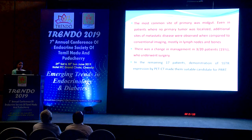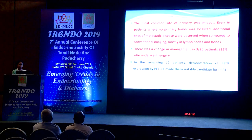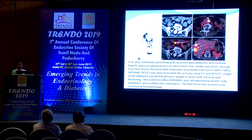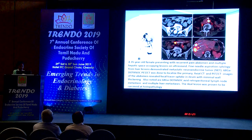Unlike CT, which uses size criteria for lymph nodes, Gallium DOTA-NOC PET-CT can detect uptake in very small lymph nodes of 0.4 to 0.5 cm — that is the difference between functional imaging and CT imaging. Management was changed in 15% of patients. One case showed multiple liver lesions with a small focus of uptake in the ileum with minimal wall thickening, not well appreciated on CT, proven as neuroendocrine tumor of ileum post-surgery.